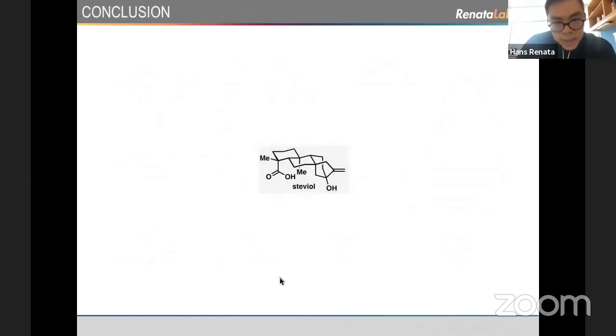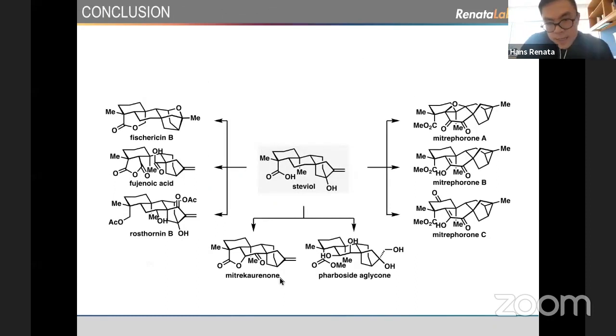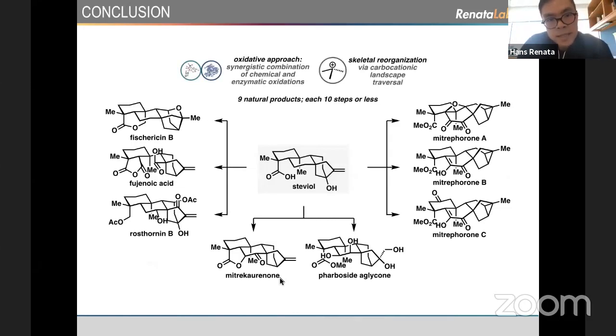To conclude, I've shown today that we can start from steviol and access nine different natural products, highly oxidized natural products, in a very efficient fashion by using a hybrid oxidative approach that combines chemical and enzymatic oxidations. I think the enabling nature of the strategy is highlighted by the fact that we can make all of these natural products in 10 steps or less. We think that now we have a very good platform to access a wide ranging members of all of these natural product families. We're excited in exploring that in the future.